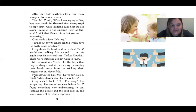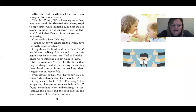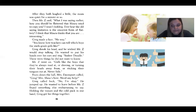After they both laughed a little, the room was quiet for a minute or so. Then Mr. Z said, 'What I was saying earlier — you should be flattered. Remember, flattery is giving that thumbs up — you should feel good. You should be flattered that Mara tried to copy you. I wasn't kidding. Ever hear that old saying — imitation is the sincerest form of flattery? I think that Mara thinks that you are interesting.' Greg made a face. 'No way.' Mr. Z continued: 'You know how teachers can tell which boys the sixth grade girls like? Girls like the boys that they're always mad at or shoving or turning their heads away from or sticking their tongues out at — never fails.'